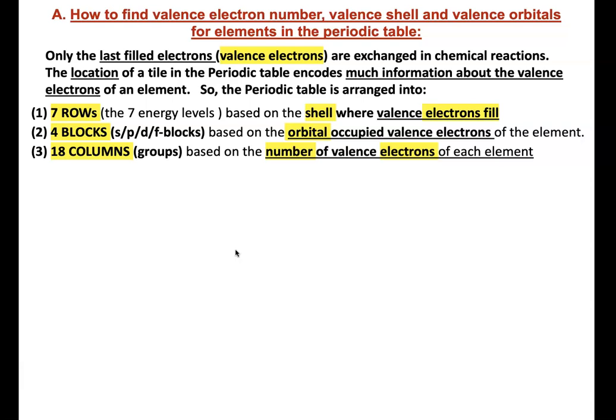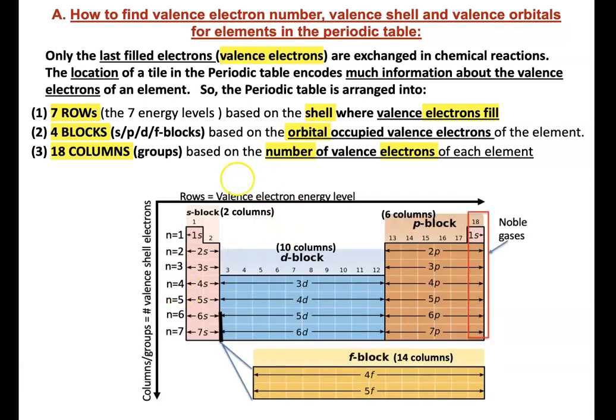The periodic table is arranged to show this information. Number 1, the rows shown here, 1, 2, 3, 4, 5, 6, 7, indicate the 7 possible energy levels of an atom, starting from the one closest to the nucleus. And these show the valence shell of an electron. For example, if you have an atom here, its valence shell is energy level 4.